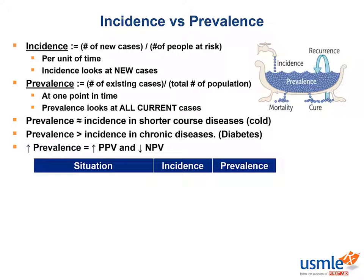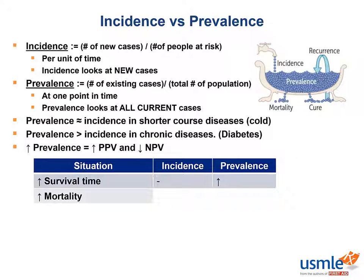Now let's go over a few examples and try to figure out if this would indicate a change in incidence, prevalence, or both. What would an increase in survival rate do to the population? Prevalence would go up, because people with the disease are living longer, more incidences are being added, and fewer people are dying from the disease. How about increased mortality? This would decrease prevalence because we have more deaths occurring from the disease — or more water leaking out of the tub.